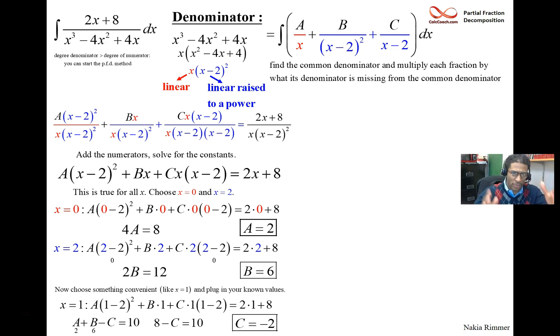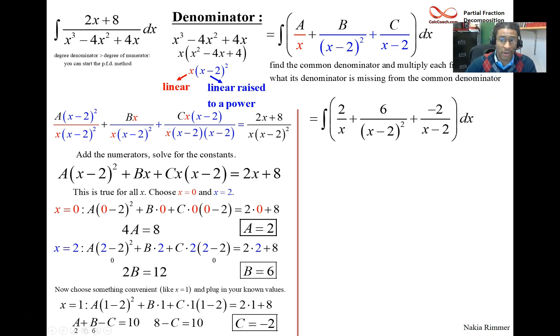Okay, so all the algebra is necessary to help us figure out how it decomposes. And now here comes the calculus. Now that we have decomposed it, can we integrate these individual fractions? So what we have is 2 over x, 6 over x minus 2 quantity squared, and negative 2 over x minus 2. So 2 over x, that's just going to be 2 times the natural log of x. 6 over x minus 2 squared, that's going to end up being negative 6 over x minus 2. And then negative 2 over x minus 2, that's negative 2 times the natural log of x minus 2. Make sure you use absolute value bars when you have these natural logs as the antiderivative.